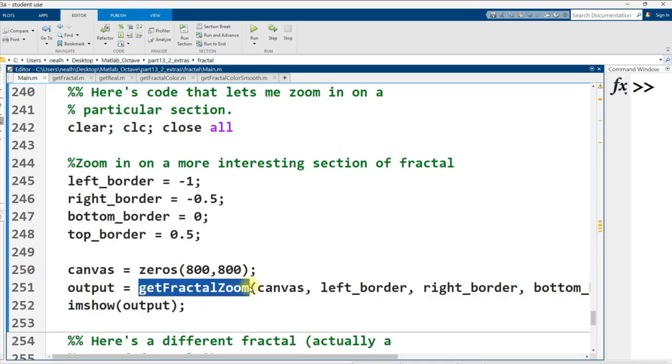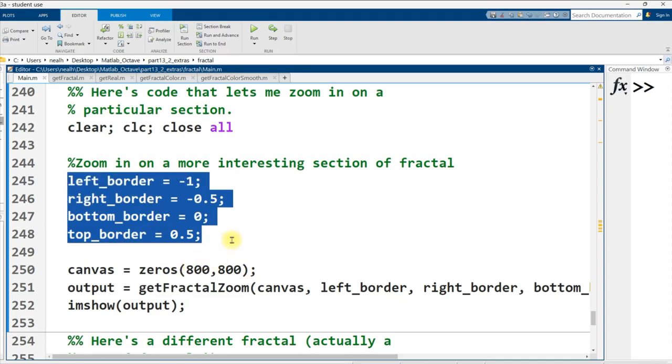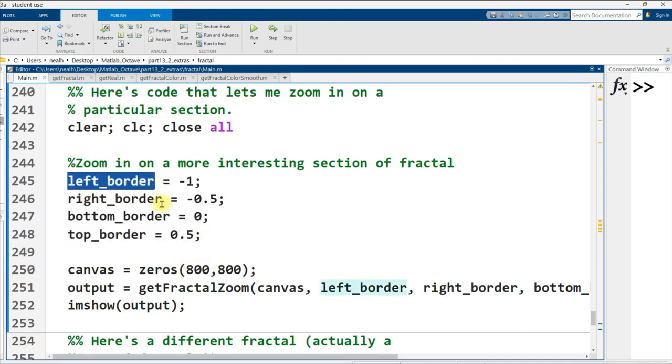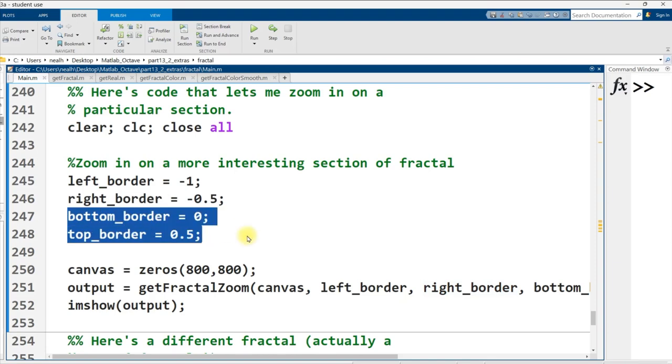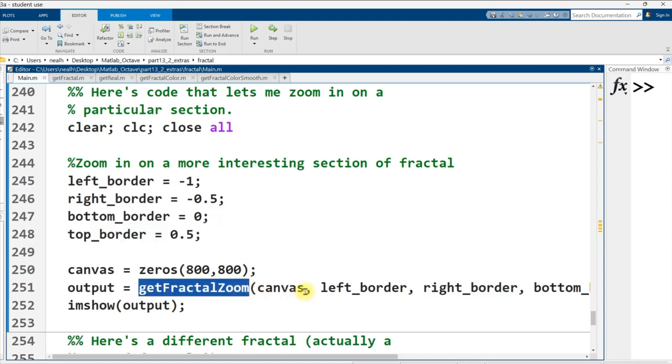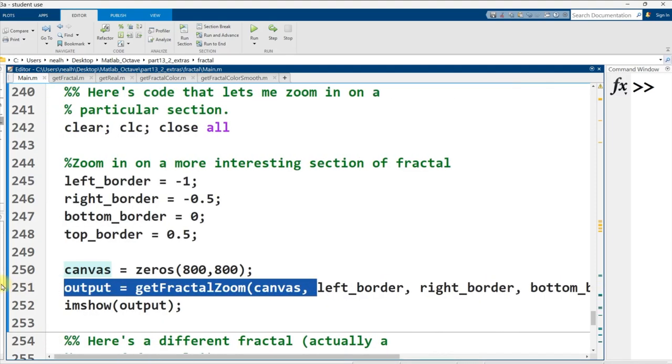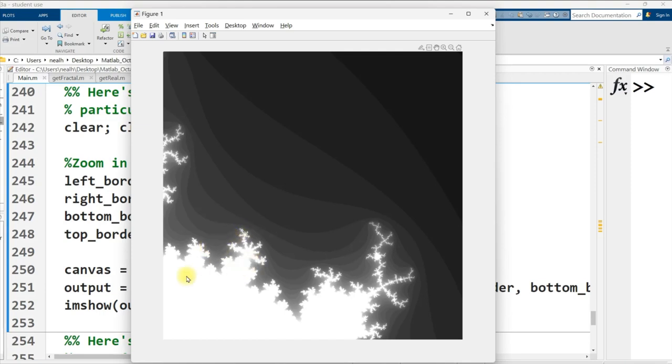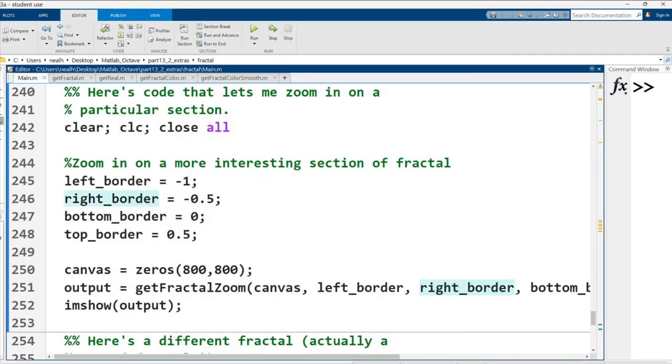I like this next one right here. This next example, the getFractalZoom, allows me to zoom in on a particular part of the fractal. I don't have to go from negative two to two in both the real and imaginary axes. I have these variables right here to specify what is the left border or the minimum real component, and what is the right border, the maximum horizontal. Same with the vertical, the imaginary component. Let me run this section. I've zoomed in on a part of the fractal toward the upper right.